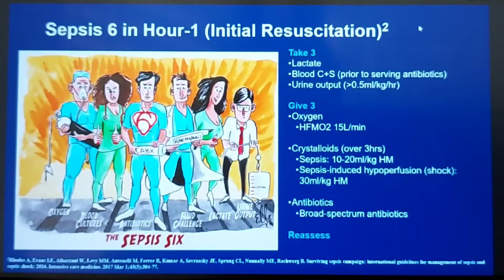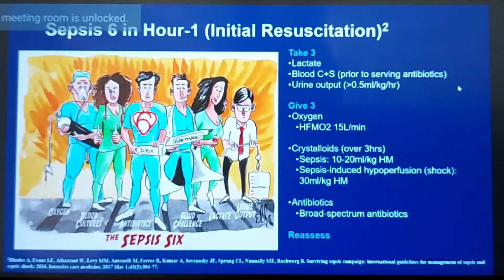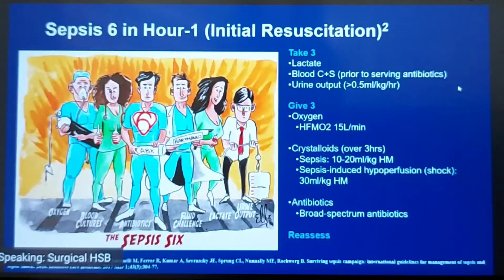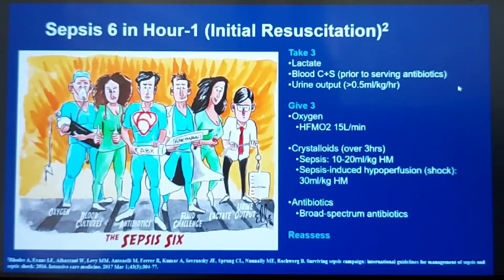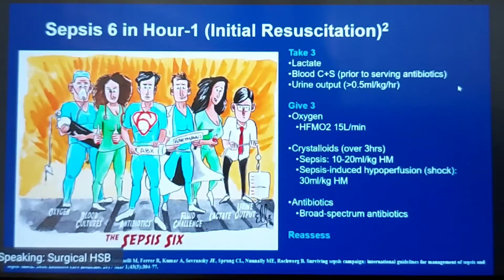These are the most important components of management of Sepsis once identified — the Sepsis 6, from the 2016 guidelines. We take 3 and give 3 upon diagnosis: we take lactate, cultures, and monitor urine output, and we give oxygen, crystalloids, and antibiotics. We reassess patients after 1 hour and after 3 hours of fluid resuscitation. The differences in the current guidelines involve the type and amount of fluids recommended, and a few other minor components.